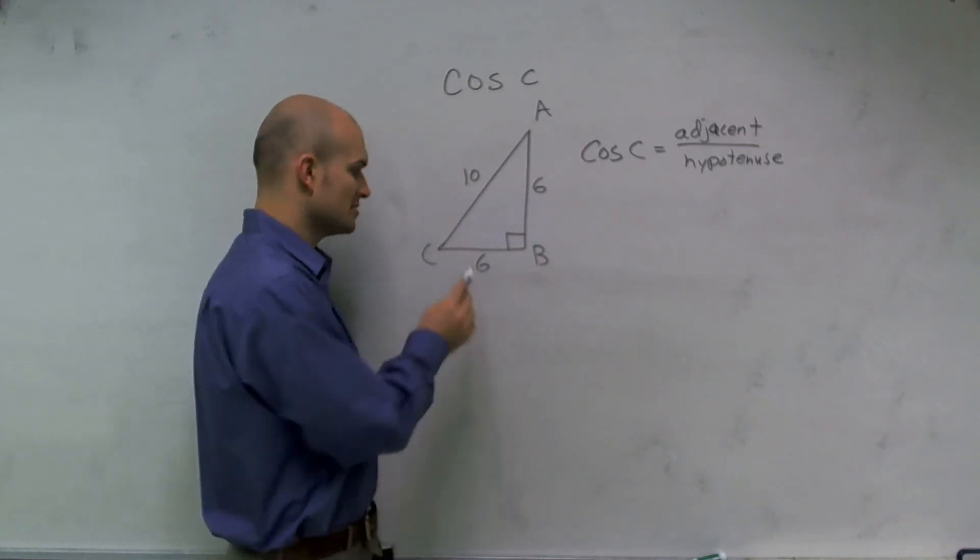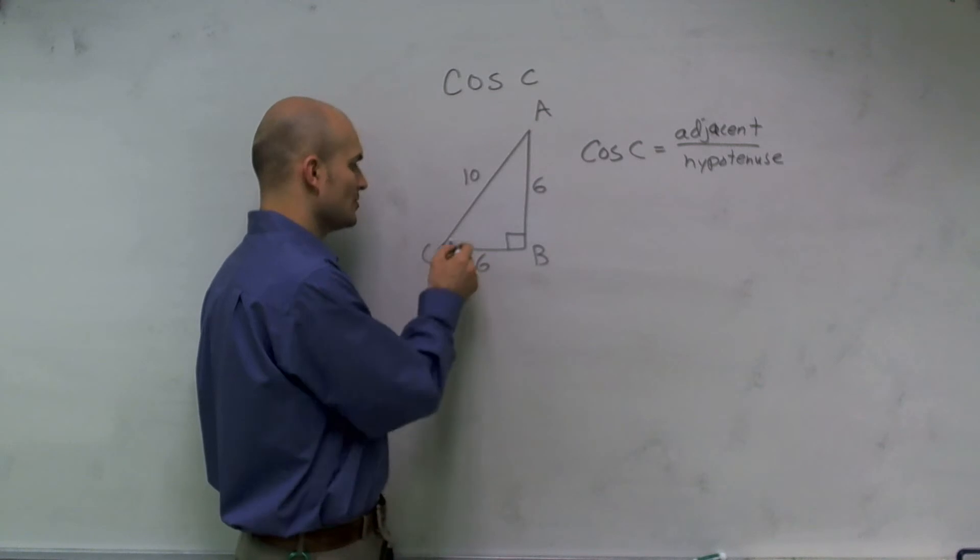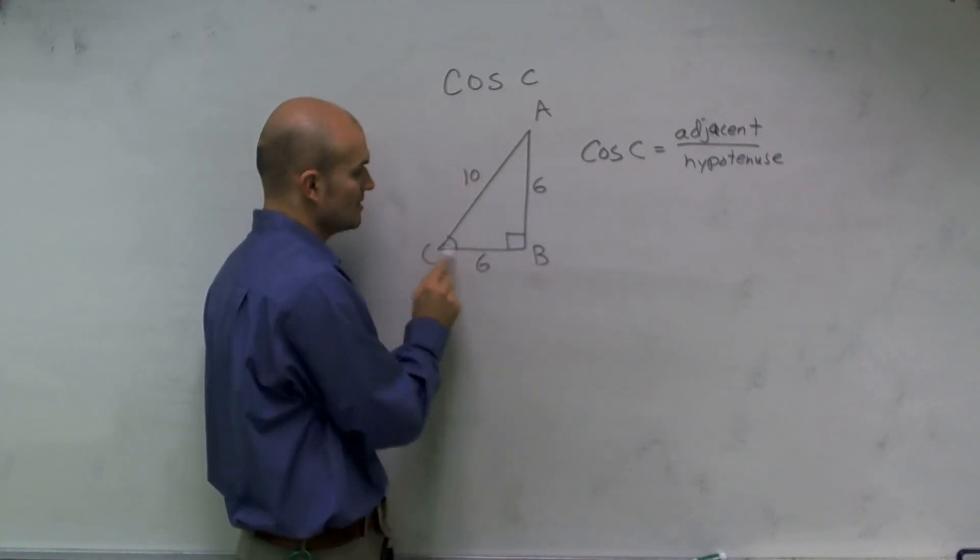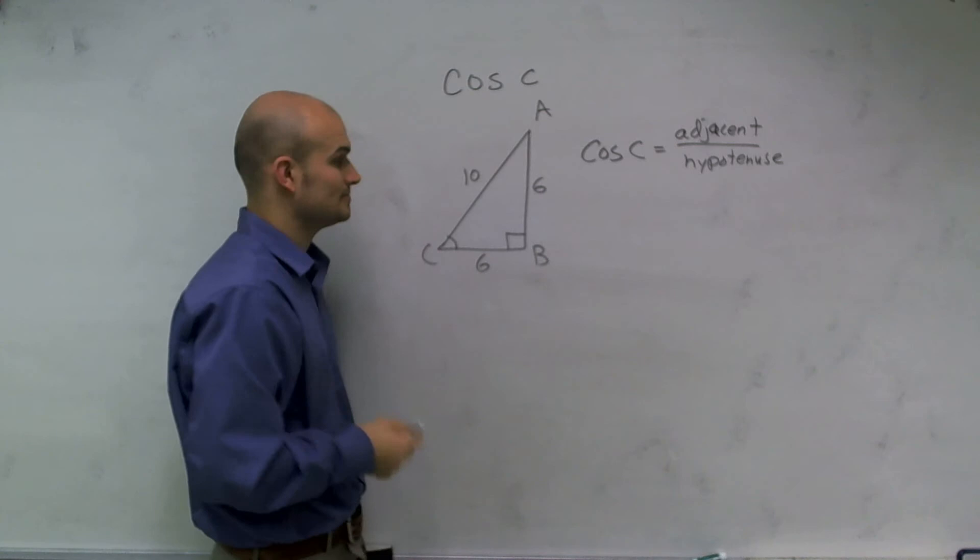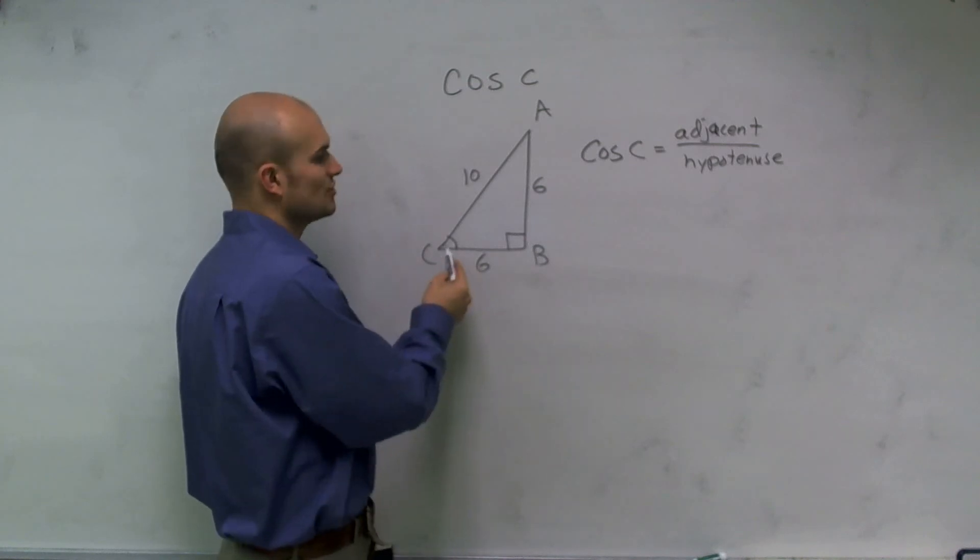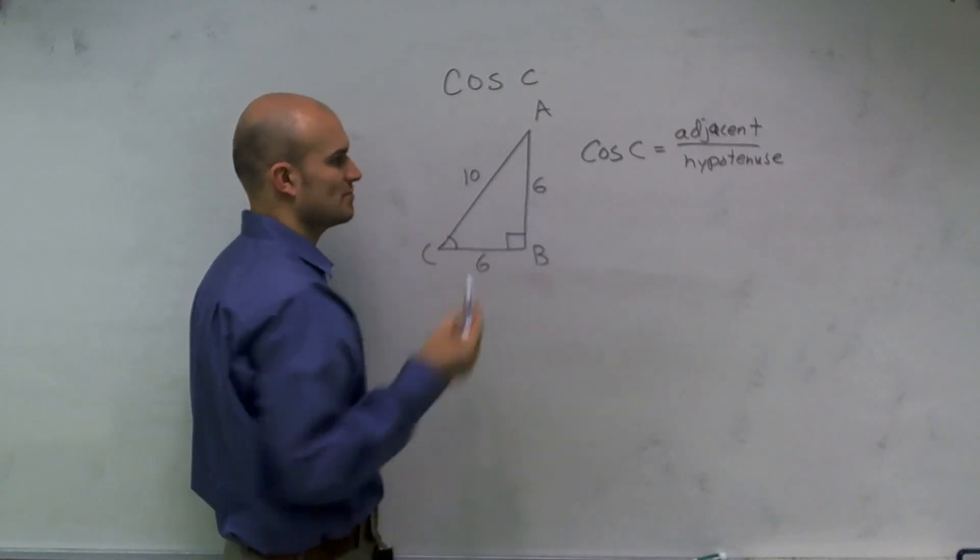Your adjacent side is going to be the side that connects your angle C, which we're using, and your right angle. Your opposite is going to be the side that's directly across from your angle.